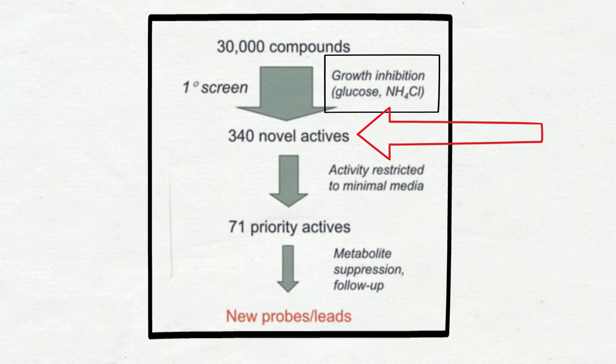Later, Somaya tried to see if she could reverse the effects of inhibition by adding back certain nutrients in the environment. Of the 340 active compounds, she was able to reverse the effect on 71 of them. These were labeled priority actives.